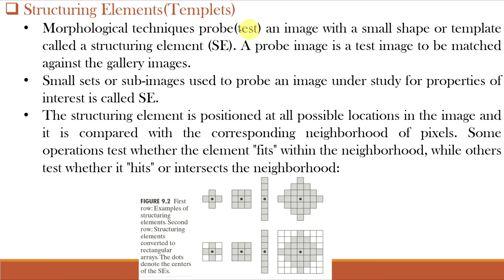Morphological techniques probe or test an image with a small shape or template called a structuring element (SE). The test or probe image is to be matched against the image under consideration. Small sets or sub-images used to probe an image for properties of interest are called the structuring element. A structuring element is positioned at all possible locations in the image and compared with the corresponding neighborhood of pixels. For example, this first row shows structuring elements: cross, square, a vertical row, and a diamond shape — with the center of the structuring element marked.